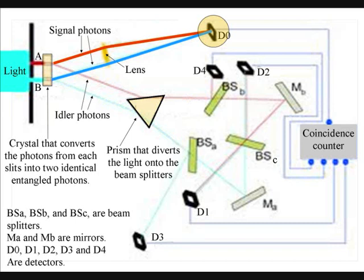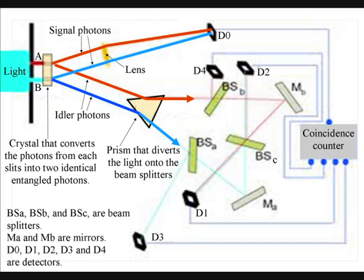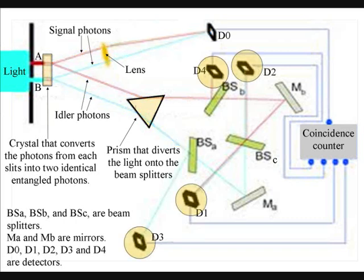The upper half is almost a normal two-slit experiment, and the detector D0 is the nearest to the two slits. Therefore, photons will always reach this detector first, before their twin or entangled photon reaches the detectors of the lower half of the diagram.